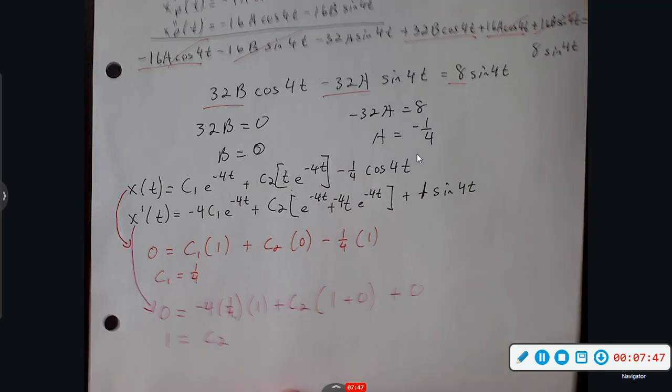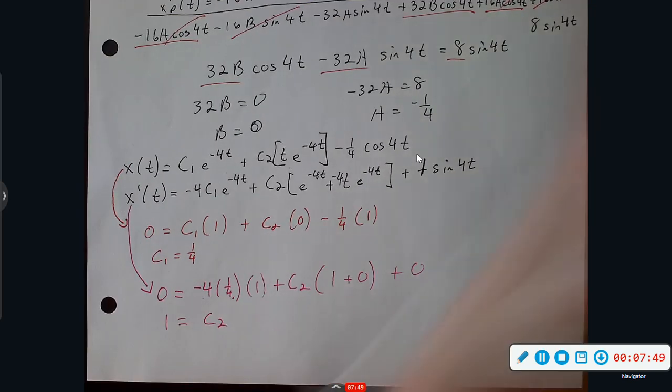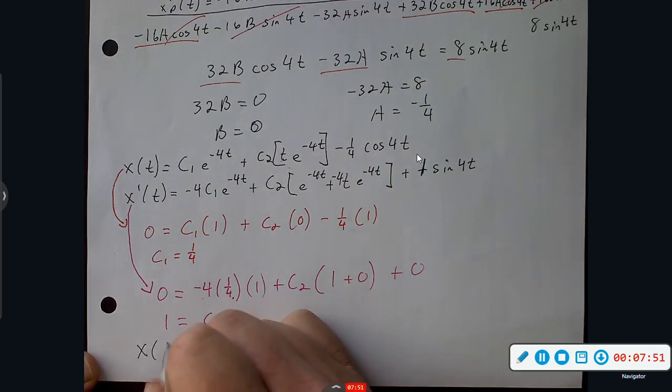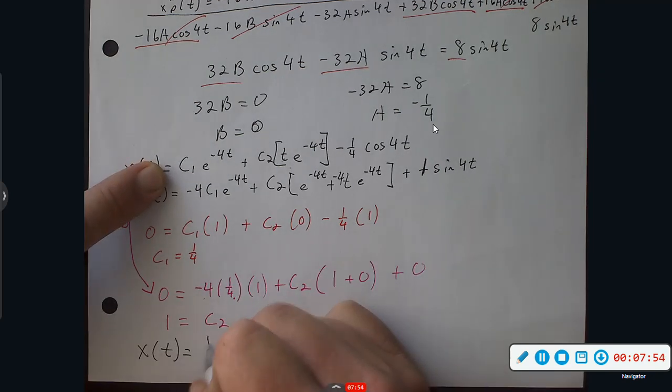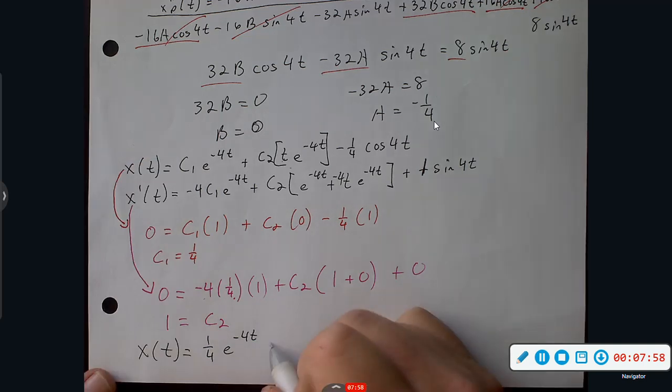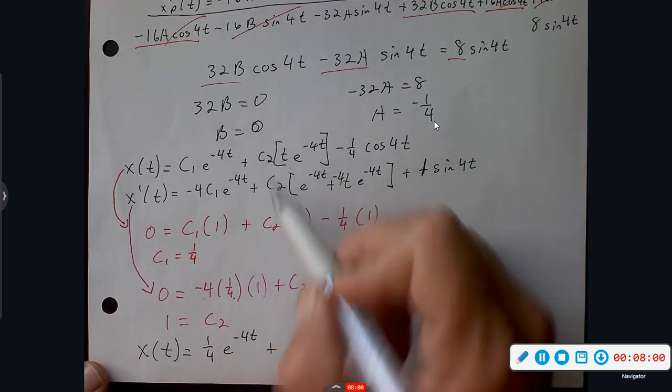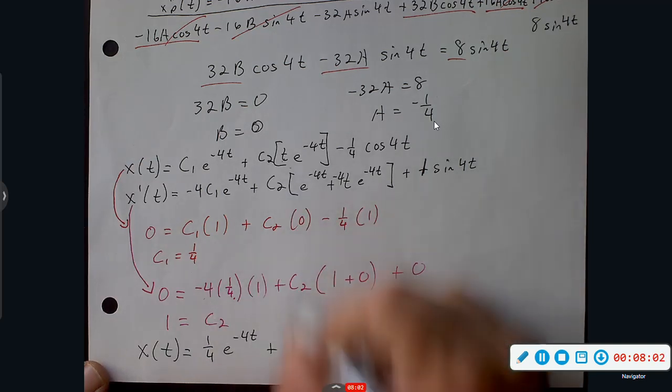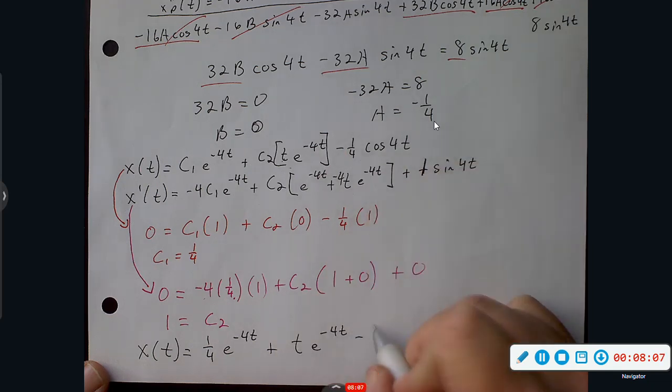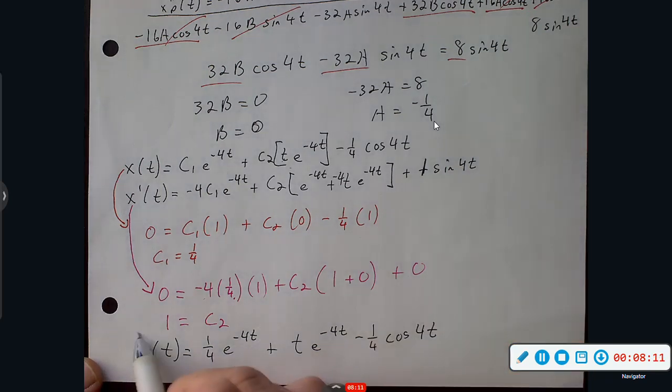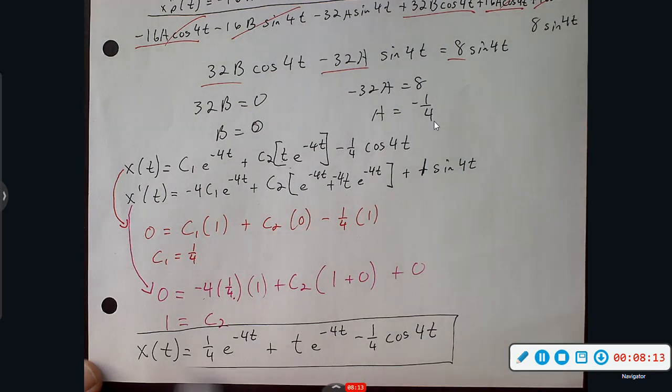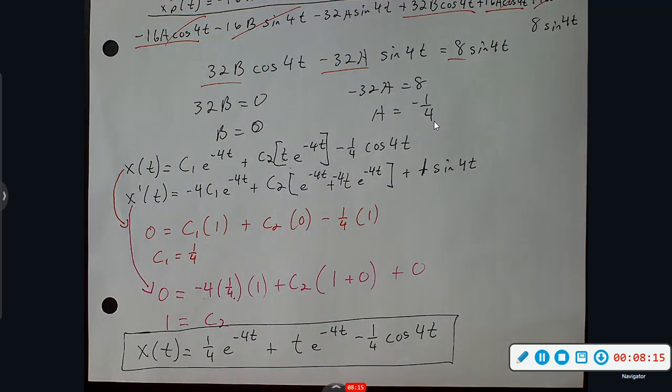Alright, we're ready to write our final answer. C1 was one fourth. One fourth e to the negative 4T plus C2, C2 was one, so it's just going to be T e to the negative 4T, and then minus one fourth cosine 4T. That's our answer. Quick little video here, that one wasn't too bad. Hope you enjoyed it, here at eHoodie.